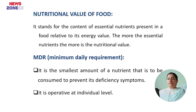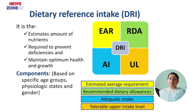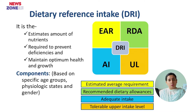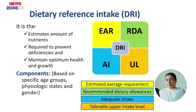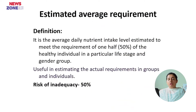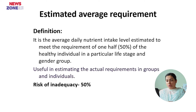Dietary reference intake is a tool used at the individual level. It is composed of four different tools: estimated average requirement, recommended dietary allowance, adequate intake, and tolerable upper intake level. Dietary reference intake is defined as the estimated amount of nutrients required to prevent deficiencies and maintain optimum health and growth, based on specific age groups, physiological states, and gender.